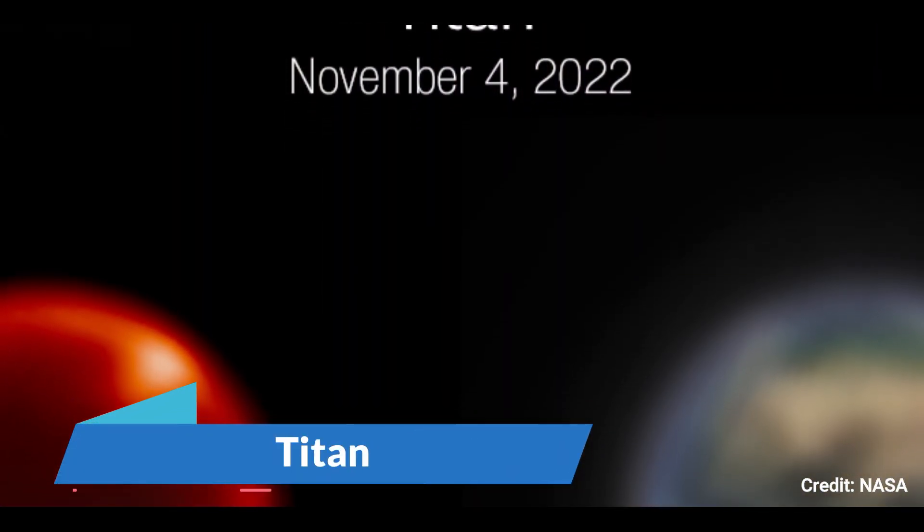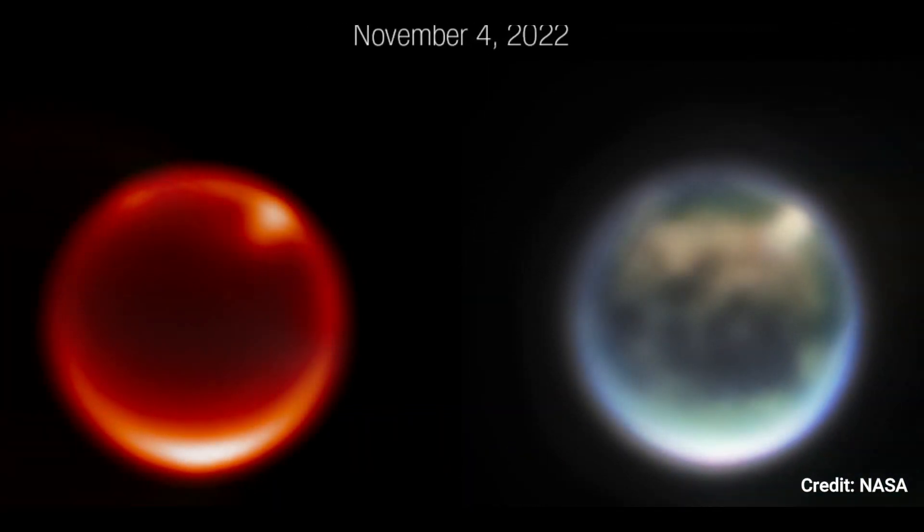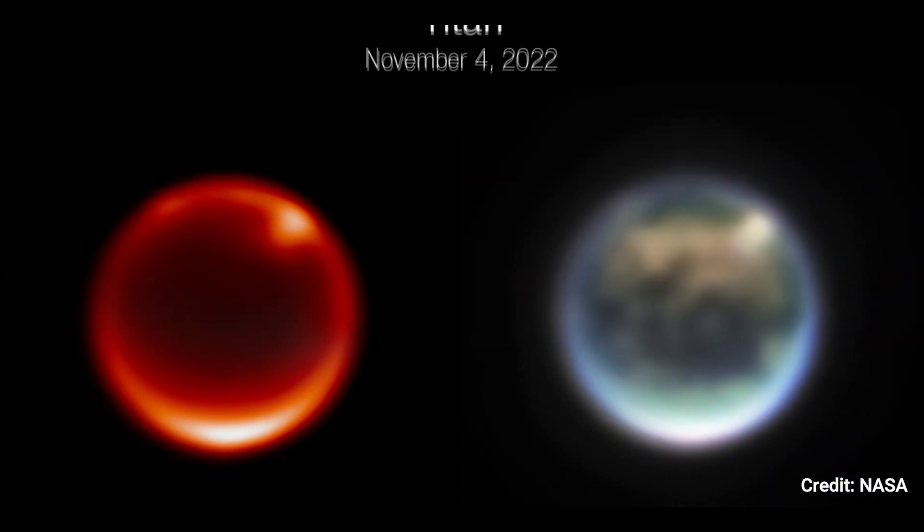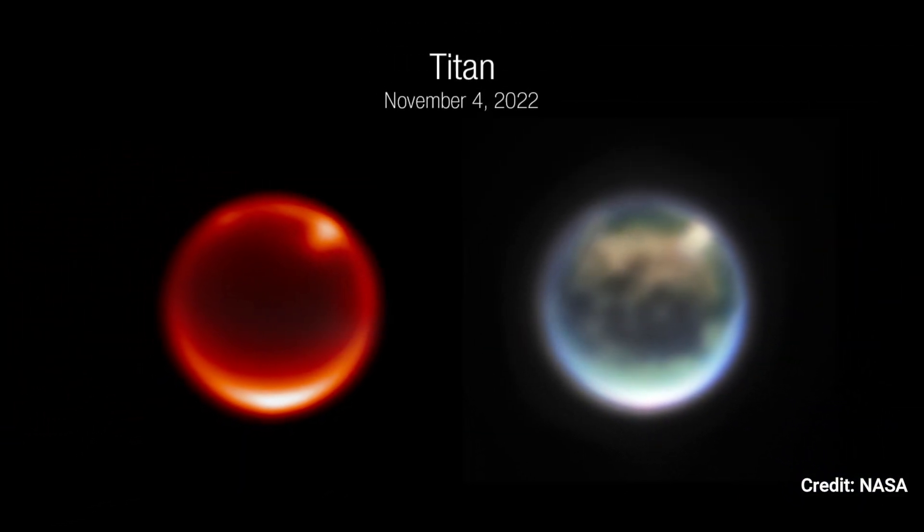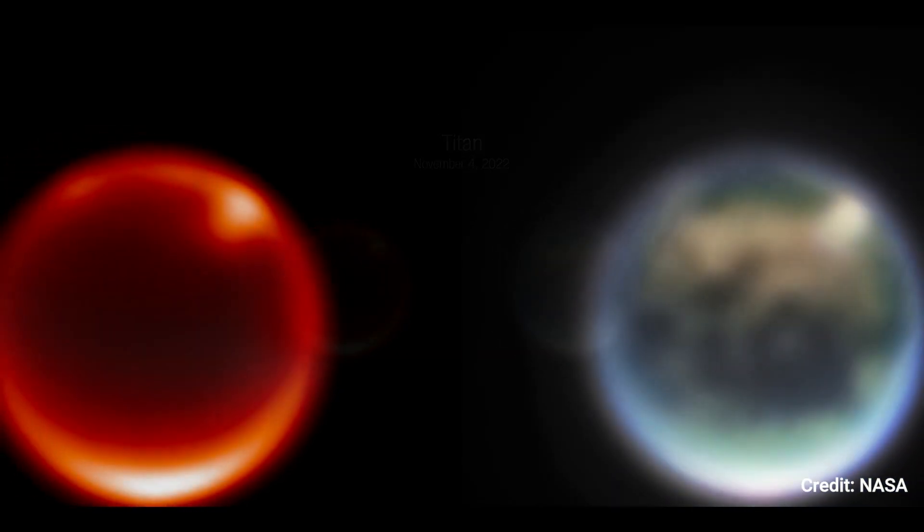Number 4. Titan Images. Acquired by the James Webb Space Telescope's NIRCam instrument on November 4, 2022. Image taken with the F212N filter, a 2.12 micron filter sensitive to Titan's lower atmosphere. In the northern hemisphere, the bright patches are clouds.